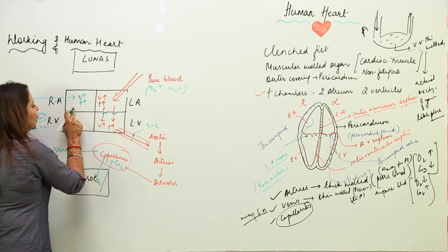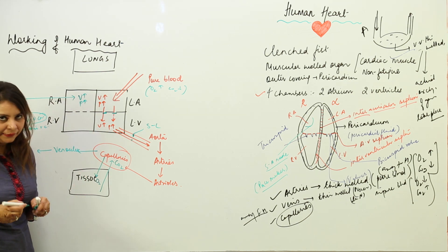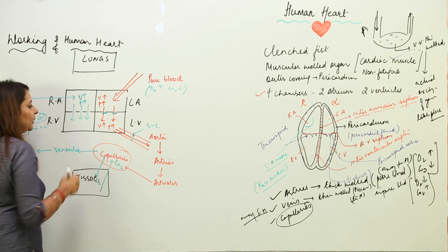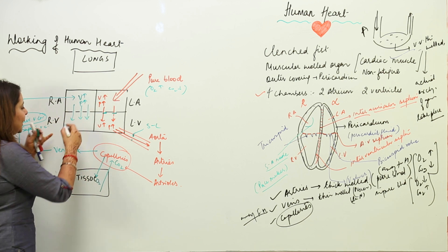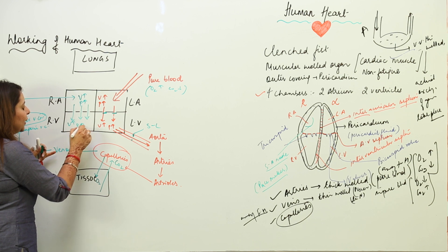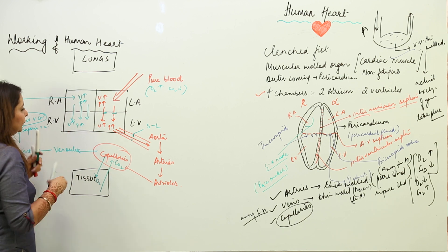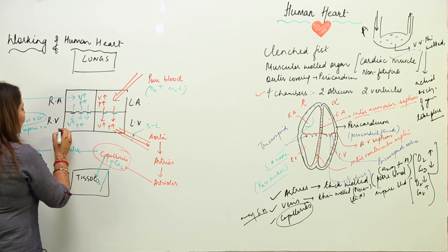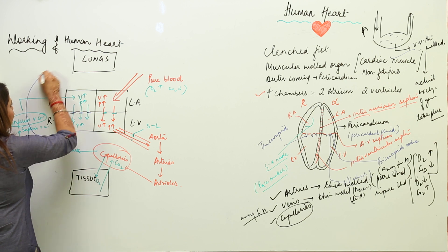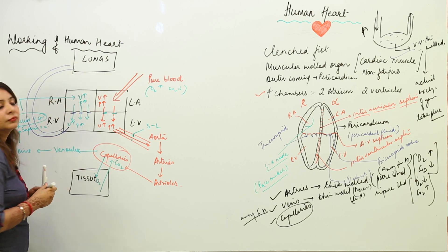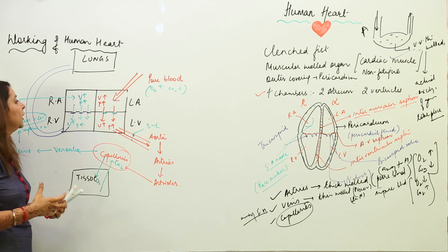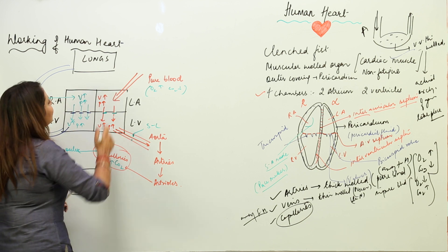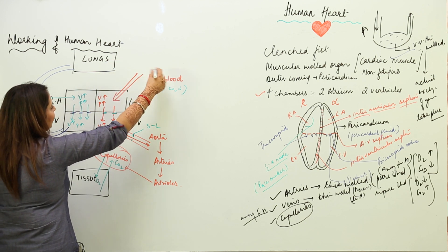Both combine and open into the right atrium. Volume increases, pressure increases, due to which the tricuspid valve opens and blood flows from the right atrium to the right ventricle. As volume increases again, the AV septum walls close and the vessel originating from the right ventricle takes blood to the lungs for purification.